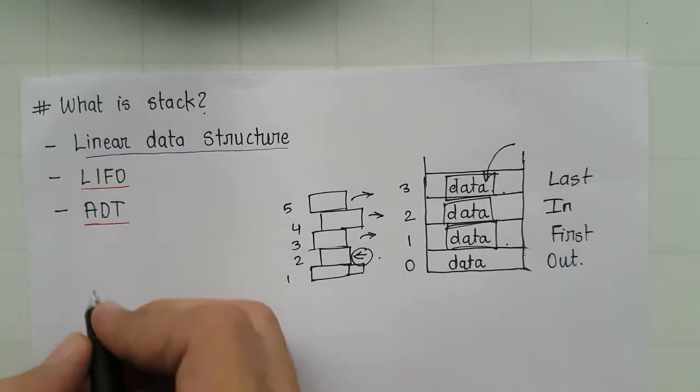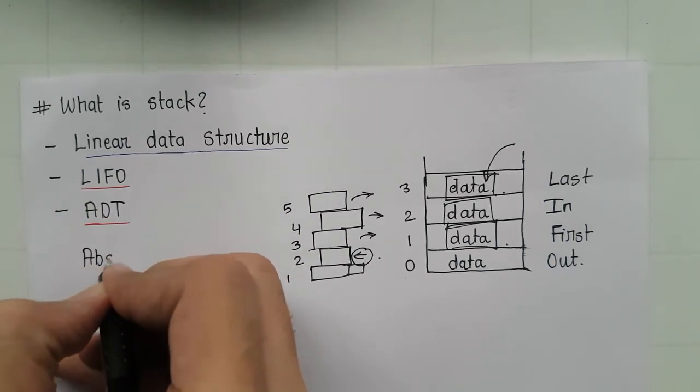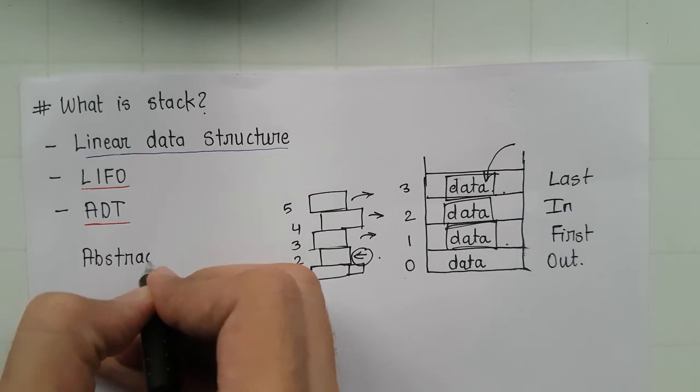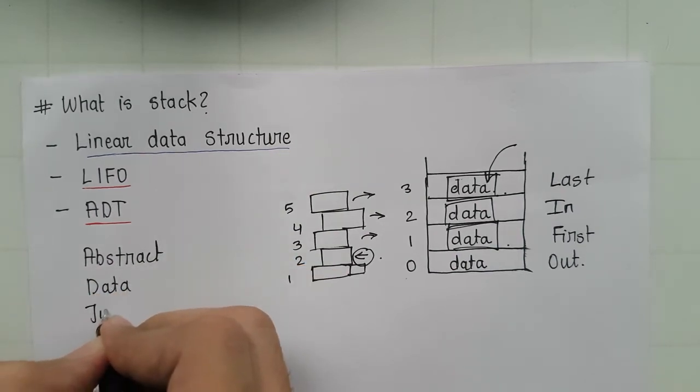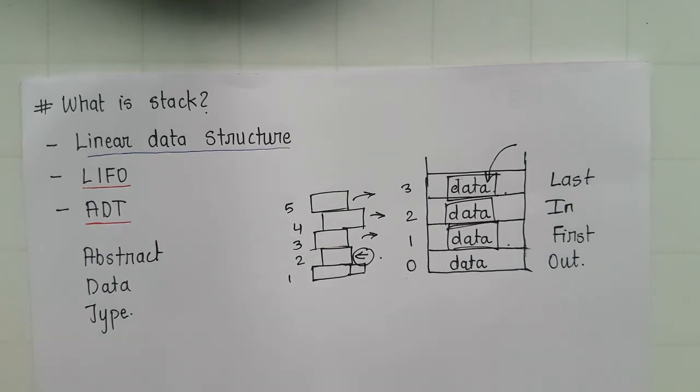ADT stands for abstract data type. Now why is the stack abstract data type? Because in stack there are mainly two operations, push and pop, which when operated on any set of data, then it is free from that which type of data that must be contained by the set.